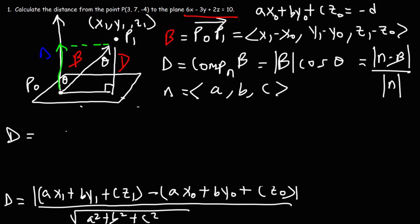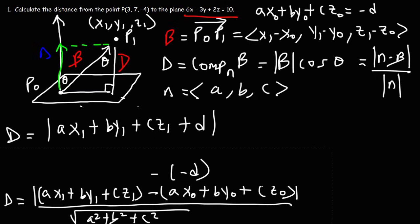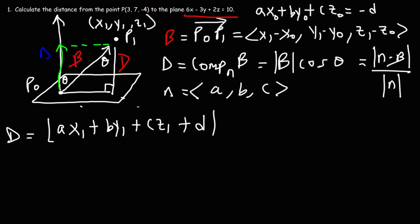So now, I have that D is going to be AX1 plus BY1 plus CZ1. Now replacing all of this with negative D, I have negative times negative D, so it becomes positive D. And then all of that will be divided by the square root of A squared plus B squared plus C squared. So this is the formula that we need in order to calculate the distance from a point to a plane.